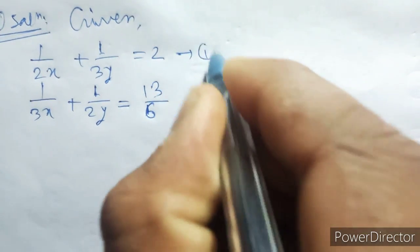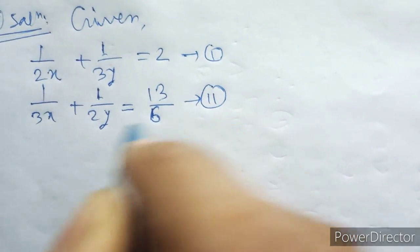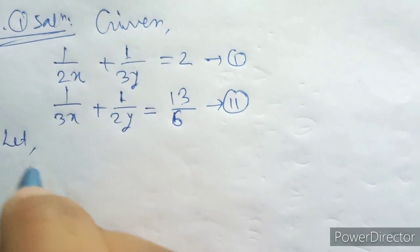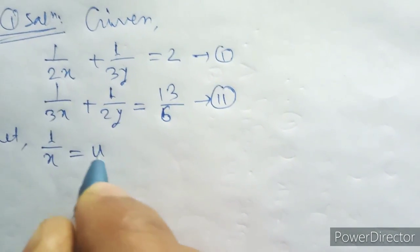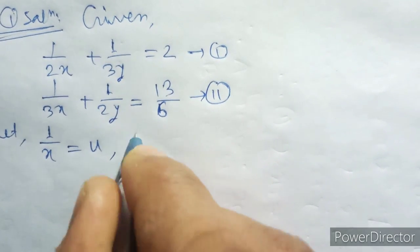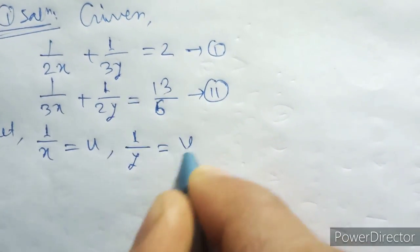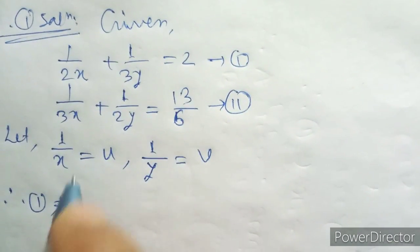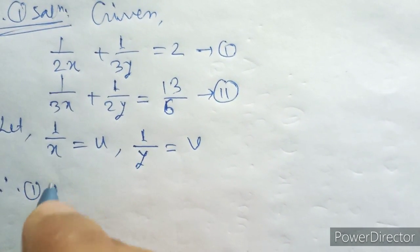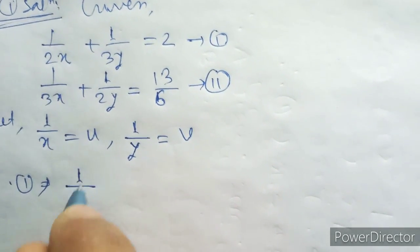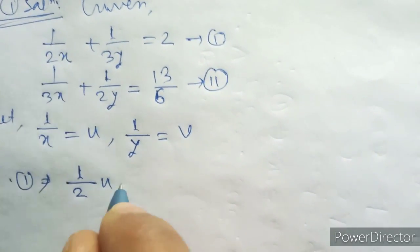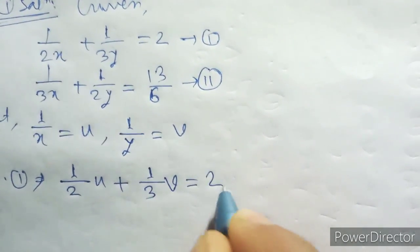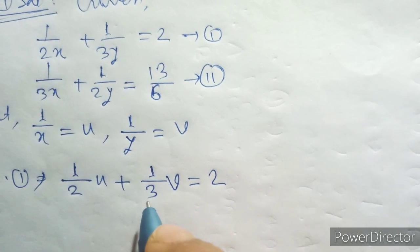1 by X equal U, and 1 by Y equal V. So, 1 by X becomes 1 by 2X, so half U, plus 1 by 3Y becomes 1 by 3 V equal to 2. This is simple.